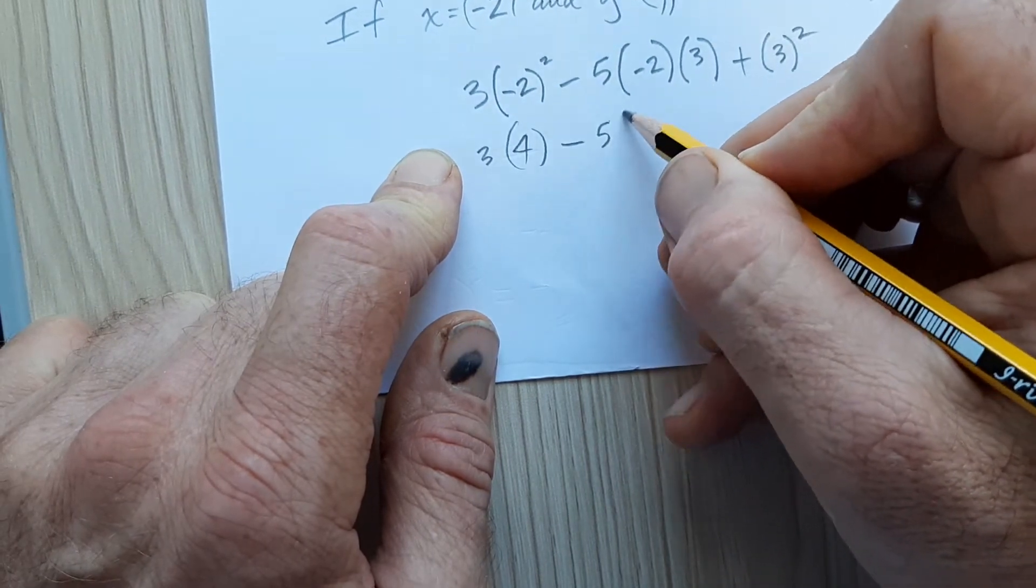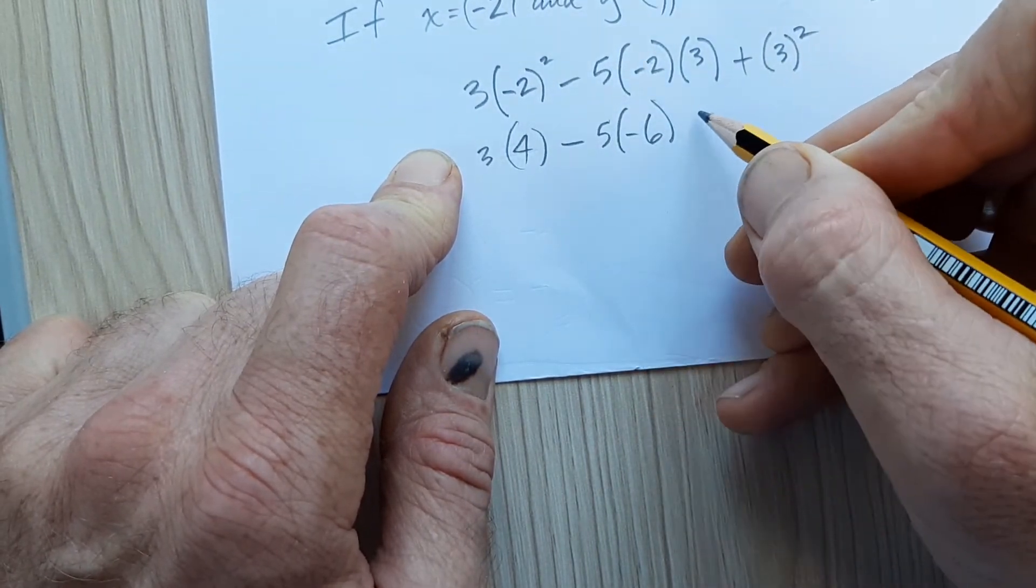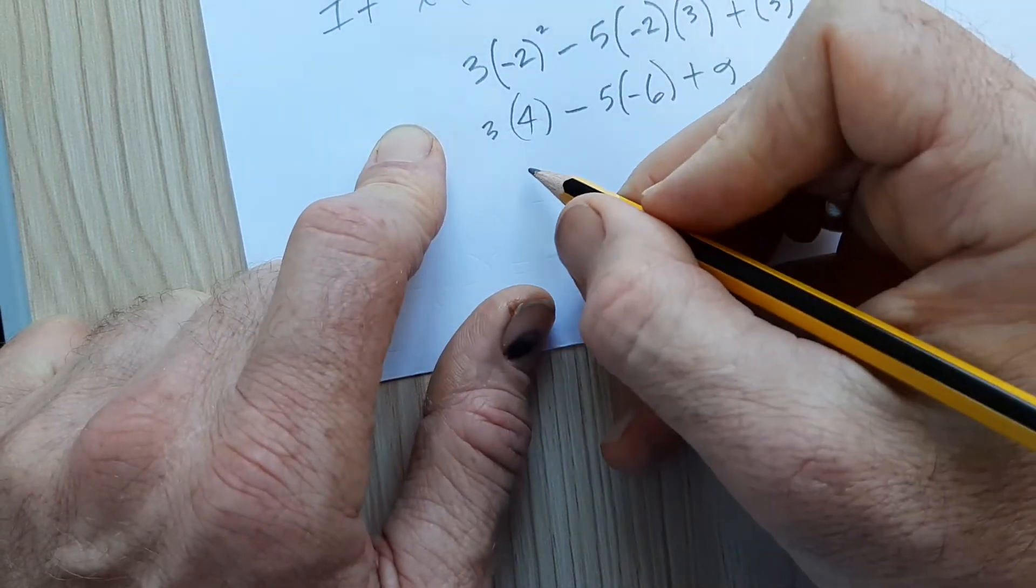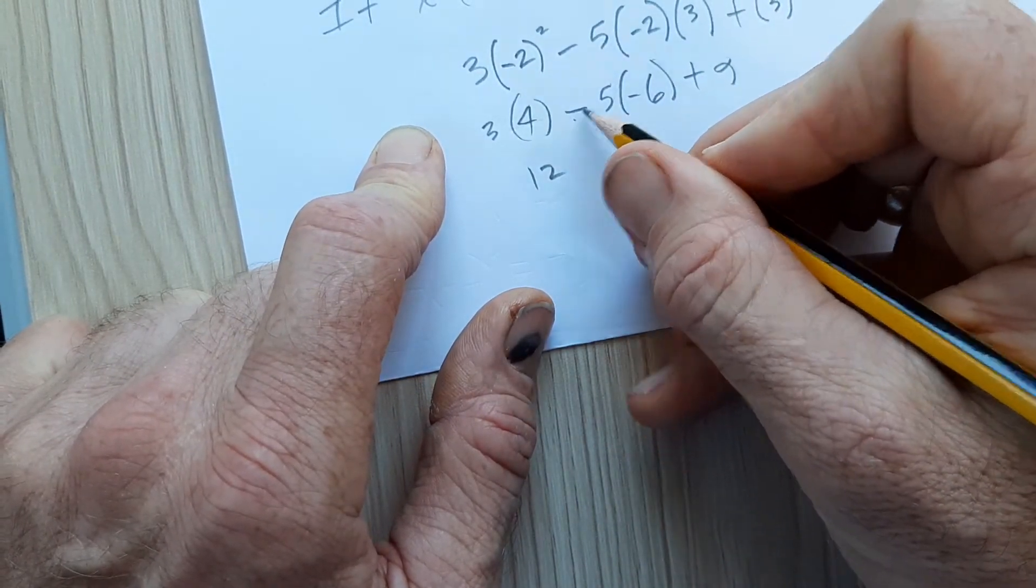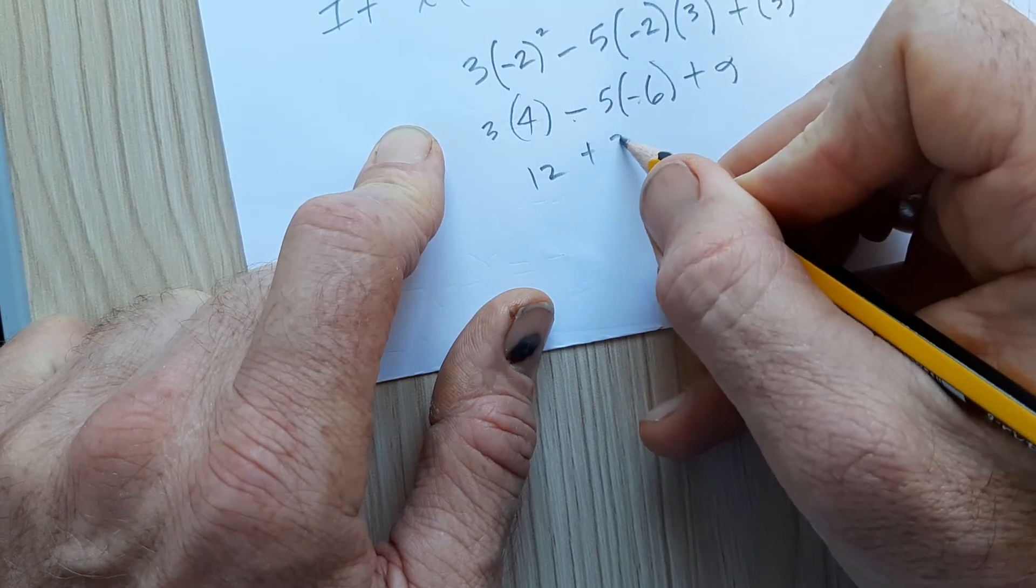This would be -5 times -6 plus 9. We got 12. Minus times minus is plus. Plus 30.